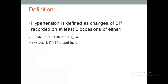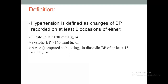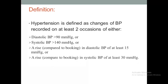By definition, hypertension is defined as changes of blood pressure recorded on at least two occasions, 15 minutes to four hours apart. We consider it hypertension if there is a rise in diastolic blood pressure of 90 mmHg and above, and/or a rise in systolic blood pressure of 140 mmHg and above. Or if there is a raise in diastolic blood pressure of at least 15 mmHg, or systolic of at least 30 mmHg, compared with measurements in early booking or early pregnancy.